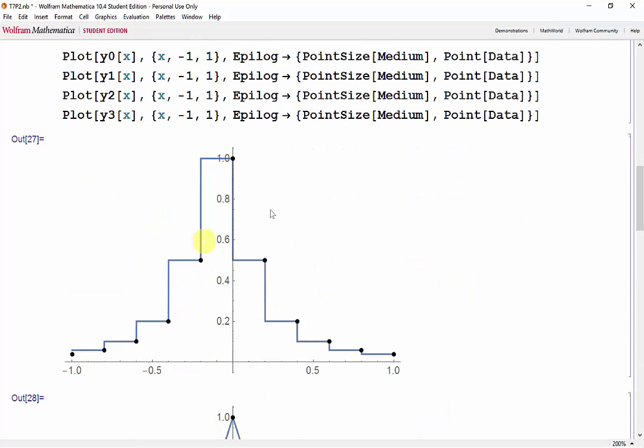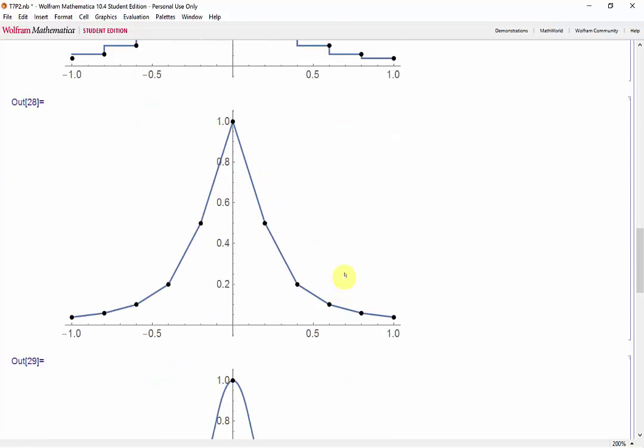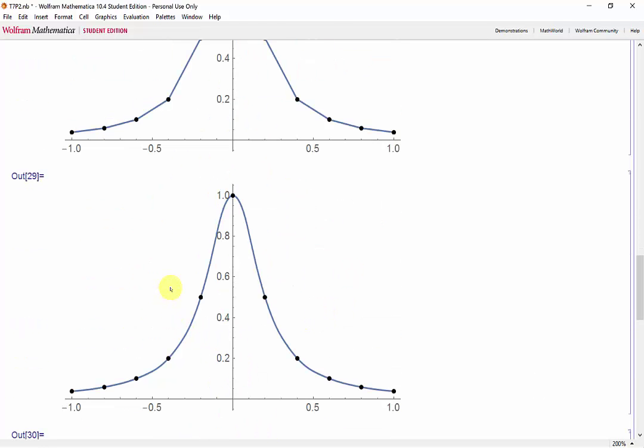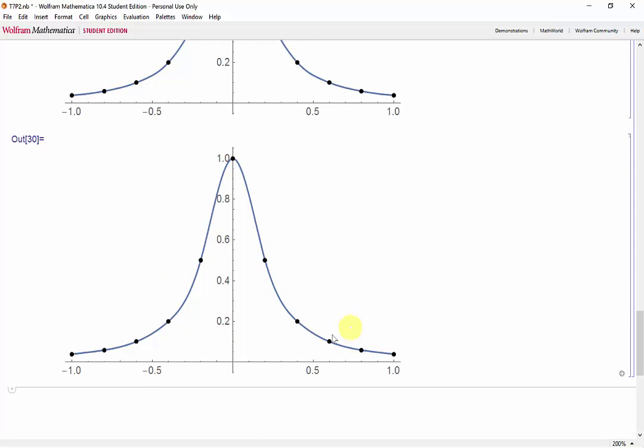And here we can see the difference between the different interpolation orders. So here's the constant, the linear, the quadratic, and the cubic splines.